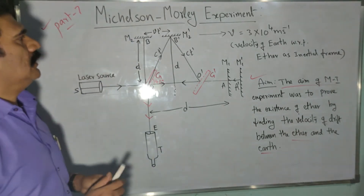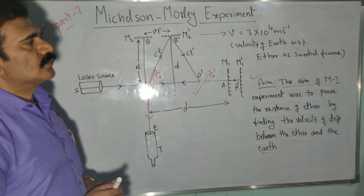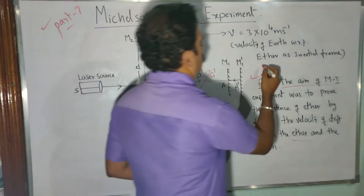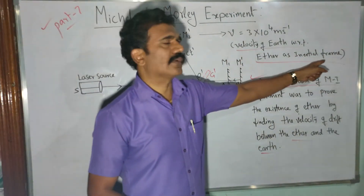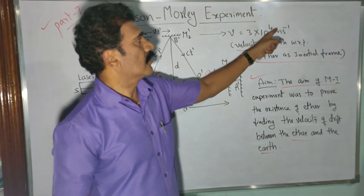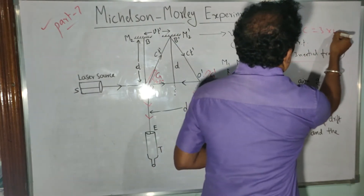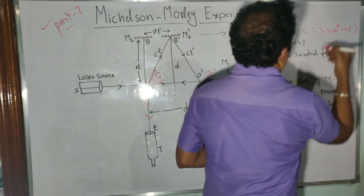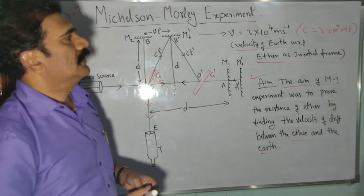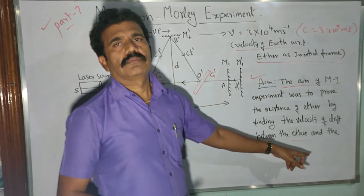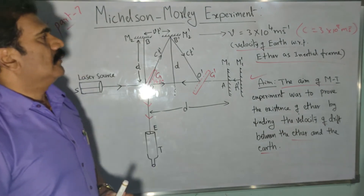With that aim, they set up an experimental arrangement where we assume that earth is moving with respect to ether as an inertial frame. The velocity of earth with respect to ether is taken as 3×10⁴ m/s, and the velocity of light c is equal to 3×10⁸ m/s. Both velocities are determined with respect to ether as an inertial frame.